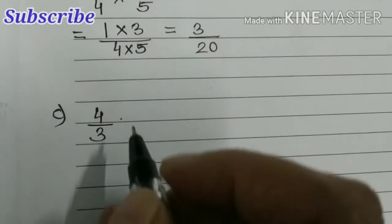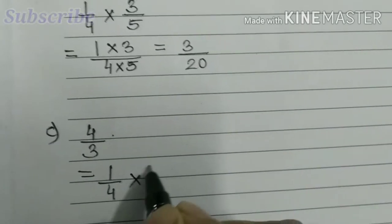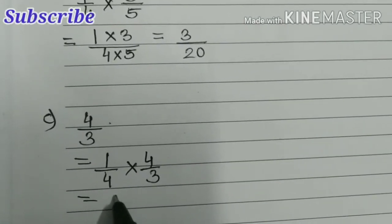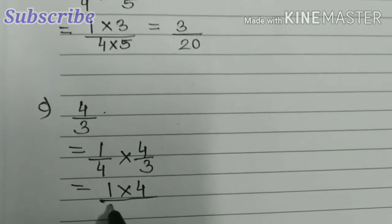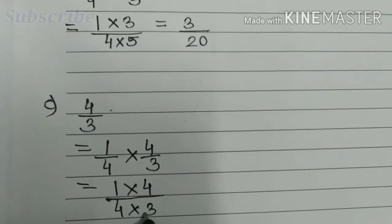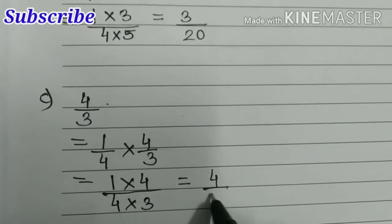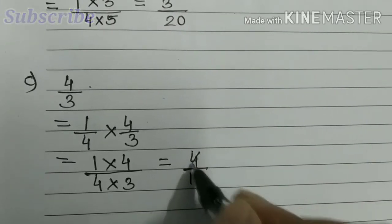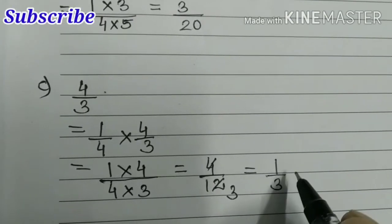Part (c) is four-thirds. So one-fourth times four-thirds. Again, 1 times 4 numerators by 4 times 3 denominators, that is equal to 4 by 12. Now we can change to simplest form: 4 threes are 12, so the answer is one-third.